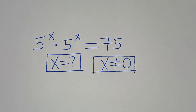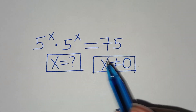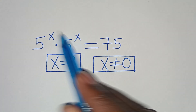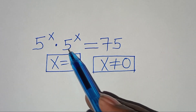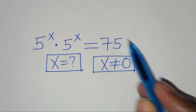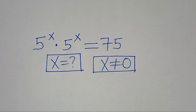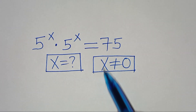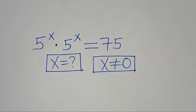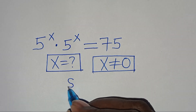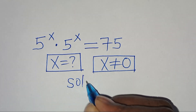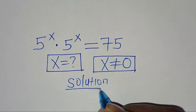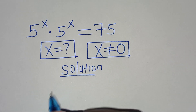Hello everyone, welcome. We need to solve this exponential equation: 5 to the power of x times 5 to the power of x equals 75. We want to find the value of x, given that x is not equal to 0.